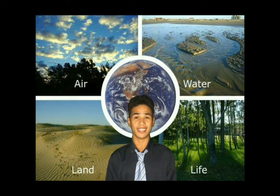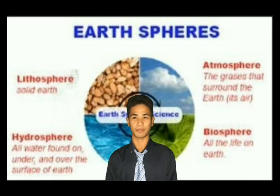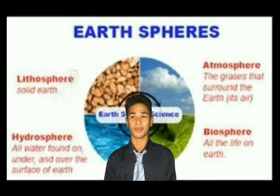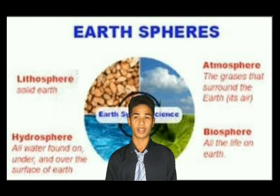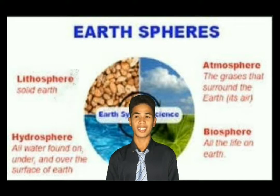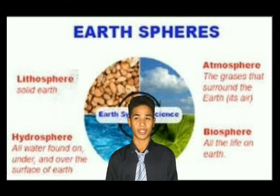Everything in Earth's system can be placed into one of four major subsystems, which are land, water, living things, or air. Within the boundary of the Earth is a collection of four interdependent parts or subsystems called spheres: the lithosphere, the hydrosphere, the biosphere, and the atmosphere.